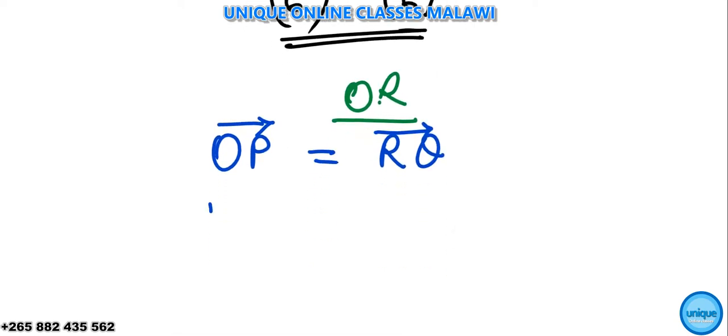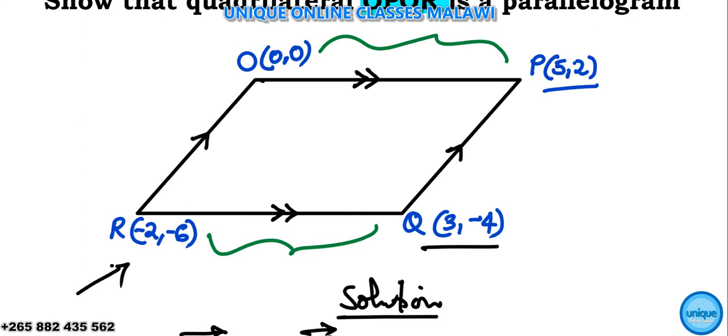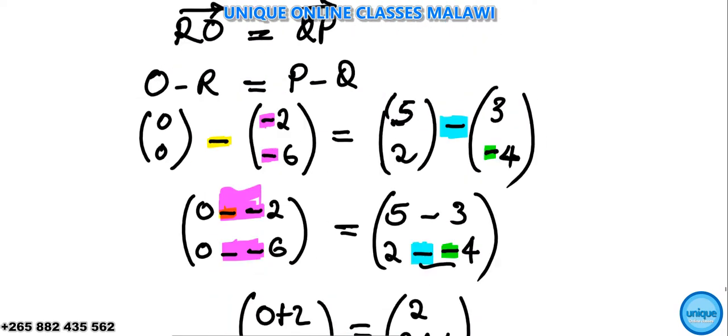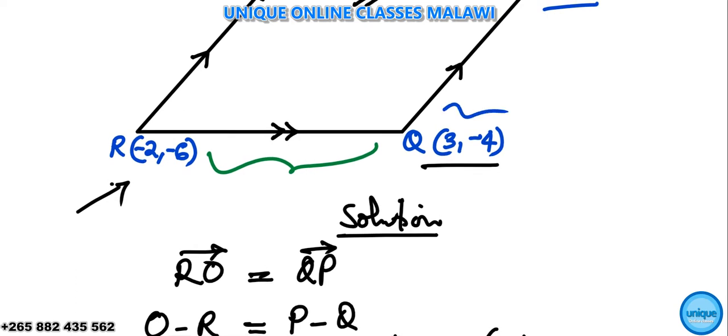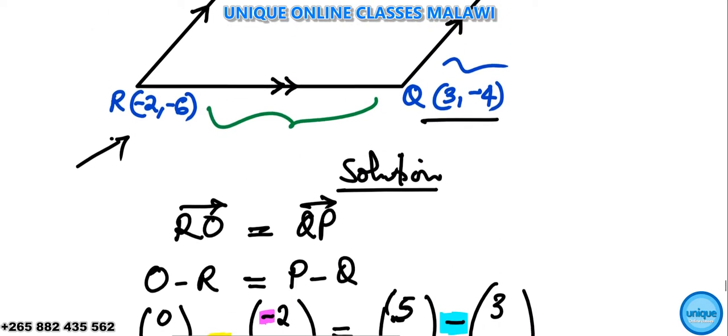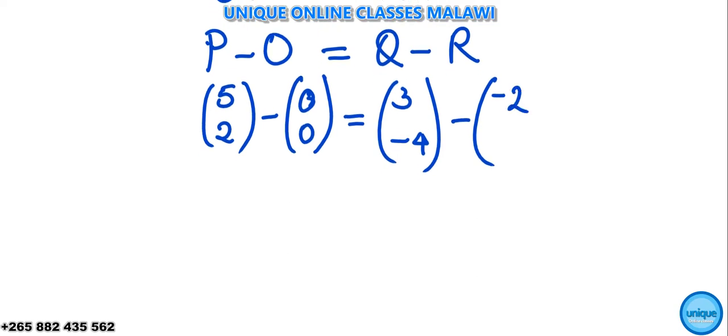So OP, that's the same as P minus O, is equal to Q minus R. So P, we've been given with P in the 5 down 2, so I'm writing here 5 down 2, then minus O, we have zero zero. Then it's equal to Q, we've been given 3 down negative 4, so I'm writing here 3 down negative 4, then minus R, given negative 2 negative 6, so I'm writing negative 2 then down negative 6.